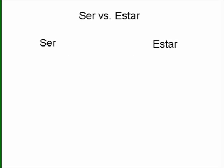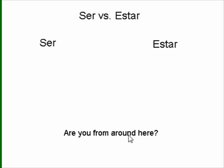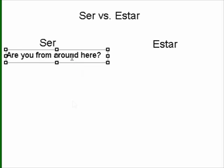Let's go ahead and try a few practice sentences to see if we've got it down. Here's one: are you from around here? Pause the video, take a second and think about it, and then I'll tell you where this goes. Okay — are you from around here? That's origin, so that would be ser.